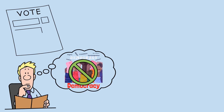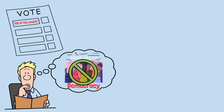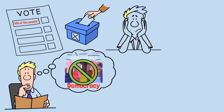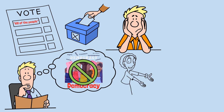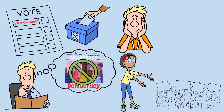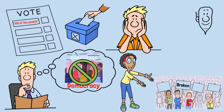Every election you've ever voted in, every will of the people, every democratic decision — it's all built on a lie. A necessary lie, maybe. But a lie nonetheless. Let me show you the math that proves we've been pretending democracy works when the fundamental logic beneath it is broken.